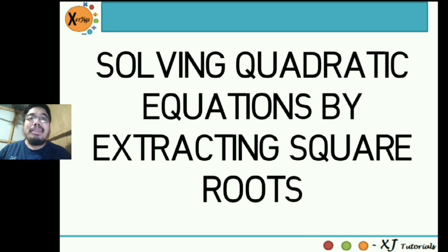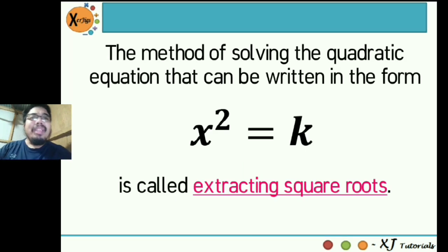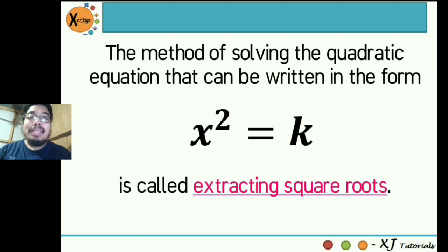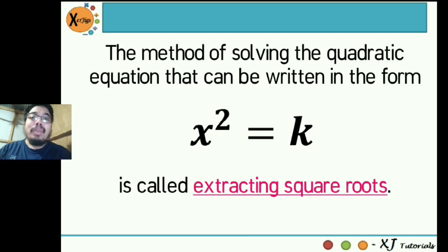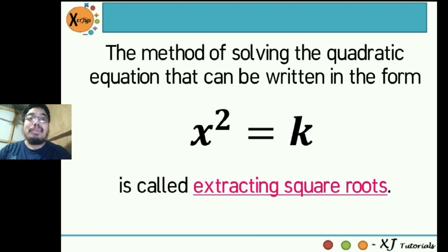For those people who already knew about this method, this might be a great refresher. And for those who did not, I am here to teach you. The method of solving the quadratic equation that can be written in the form x squared is equal to k is called extracting square roots, wherein k represents any real numbers. That means if you can rewrite a certain quadratic equation into this form x squared is equal to k, then you can use this method to solve for the roots of the equation.